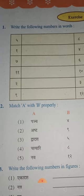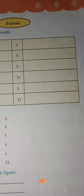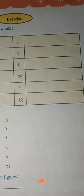See the second number — Ekam. Sabta. 12 — Duwadas. Ekadas — 11. 2 — Dwe. 9 — Nav. See here: Ast — Ast means 8. 4 — Chatwari. 6 — Sasta. 10 — Das. 3 — Trini. 12 — Duwadas.